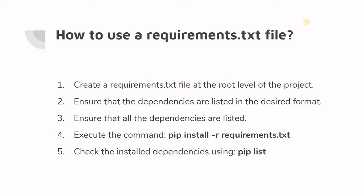The next point is to ensure that the dependencies are listed in the desired format — the specific format we discussed earlier, with each dependency written as package name == version number. It's also really important to ensure that all the dependencies are listed. If you forget one, your project might work on your system but fail when you try to move or copy it to another system or server due to the missing dependency.